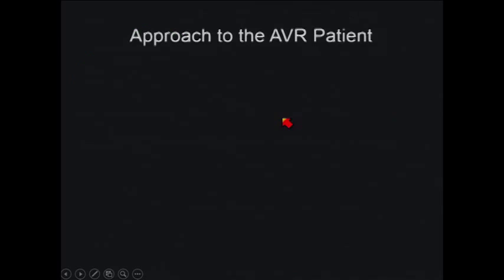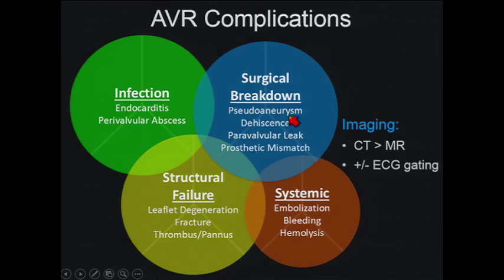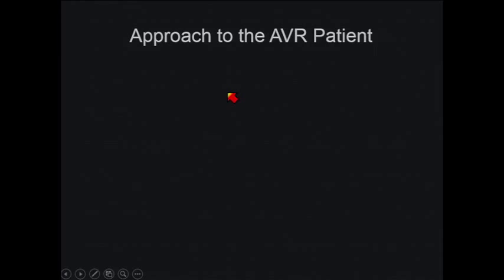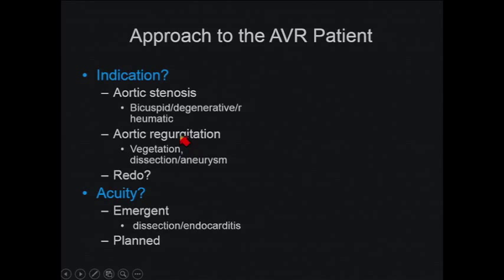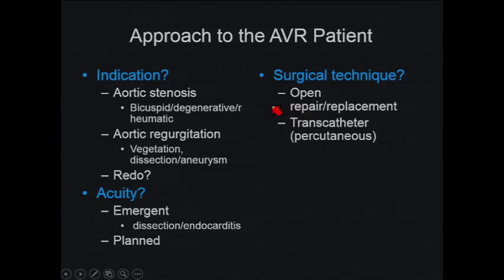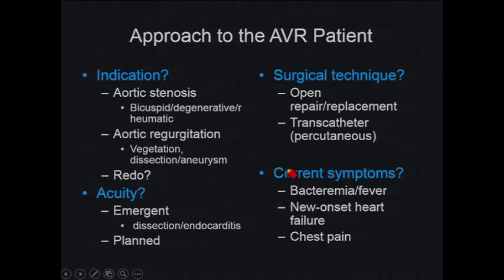When reviewing these cases with surgeons or residents, I like to preach an approach — really four questions to ask. First, know what the original indication was, because oftentimes you see a valve plus an aorta being replaced, as with a bicuspid valve with an aortopathy. Second, is this a redo valve? Third, what's the acuity? We encounter more complications in patients who undergo emergent repair — for dissection with hemopericardium or endocarditis — rather than elective surgeries. The surgical technique is also important: know where your suture lines are. And finally, what are the current symptoms? This leads you to a specific differential based on symptomatology.